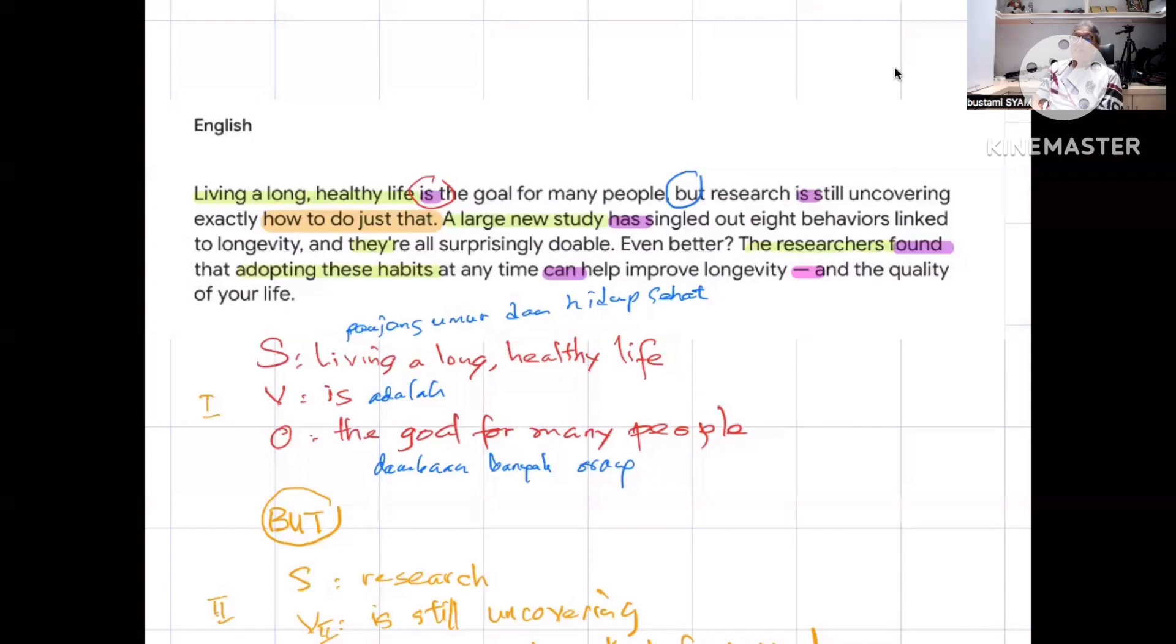'Has singled out', this means 'has revealed', what is revealed? Eight behaviors, eight habits. So, we found here the topic is about a study about eight habits, 'linked', this is connected or linked.